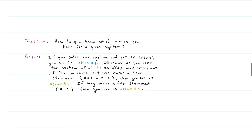How do we know which category we're in when given a system? If we get an answer when solving, we're in option one — one solution. Otherwise, all the variables will drop out as we do addition or substitution, and we'll be left with numbers and an equal sign. If those make a true statement like zero equals zero, we're in the infinite solution category. If they make a false statement, we have no solution.